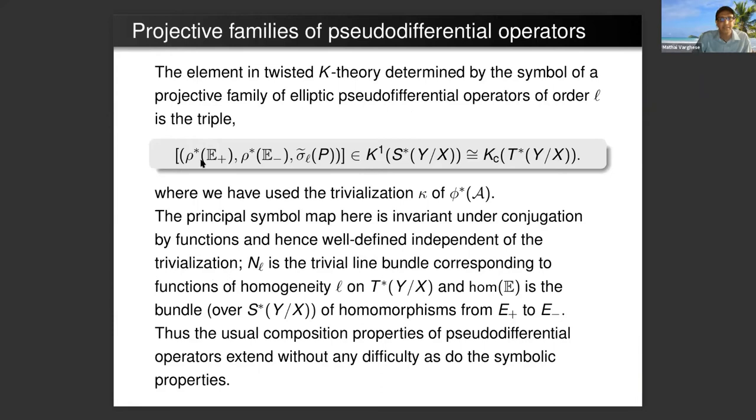J disappears here because by the definition of J, the line bundle J, its restriction to the fiber diagonal is canonically trivial. The element in K-theory determined by the symbol of a projective family of pseudodifferential operators is E^+ and E^- lifted to the cotangent bundle and the symbol. It's in K-theory K^{-1} of the cotangent bundle, which is the compactly supported K-theory of the cotangent bundle along the fibers.